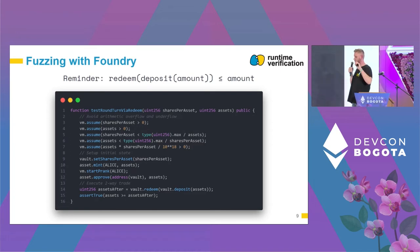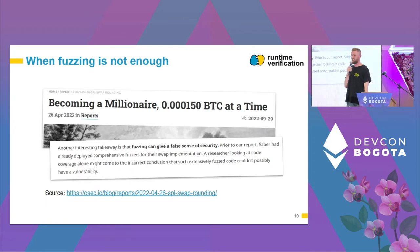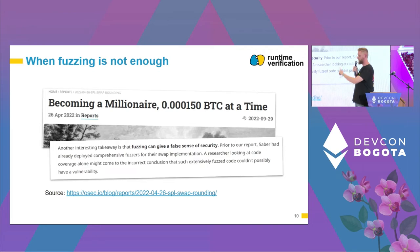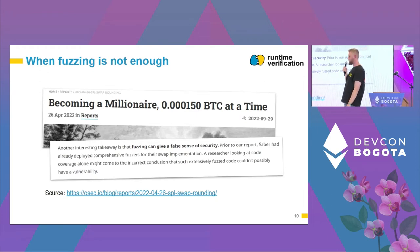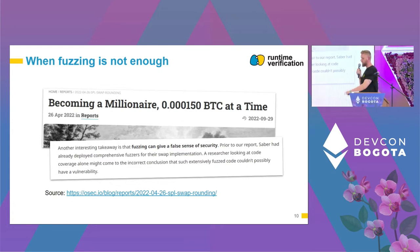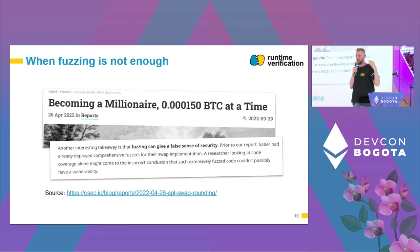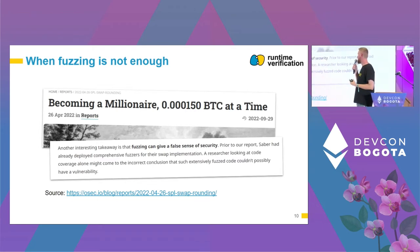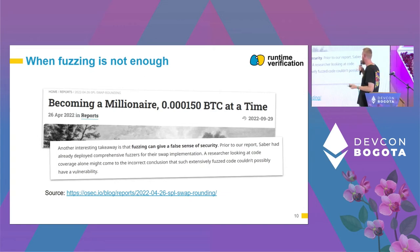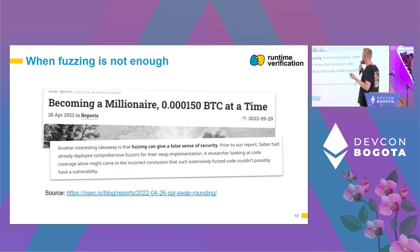Fuzzing is good and you should do it when you test for rounding errors, but fuzzing is not enough. The third example I showed — the stable swap contract — suffered from the wrong rounding direction vulnerability even though it was heavily fuzzed. From the blog post explaining this vulnerability: 'Another interesting takeaway is that fuzzing can give you a false sense of security. Prior to our report, Saber had already deployed comprehensive fuzzers for their swap implementation. A researcher looking at code coverage alone might incorrectly conclude that such extensively fuzzed code couldn't possibly have a vulnerability.'